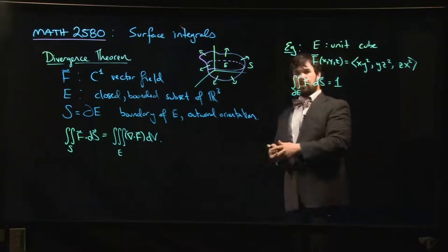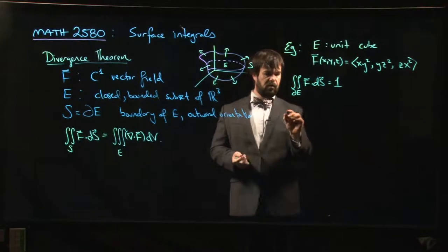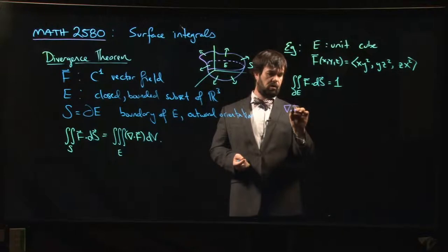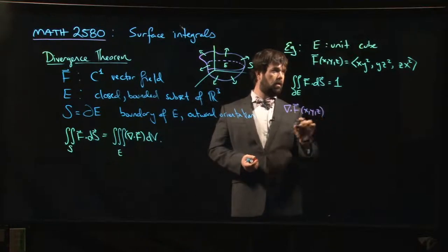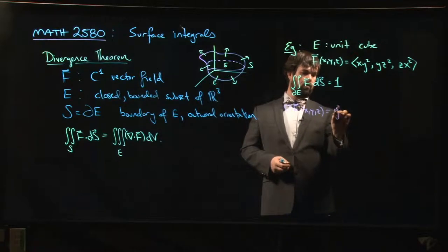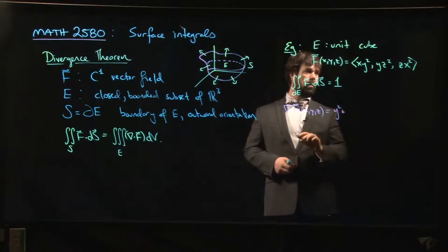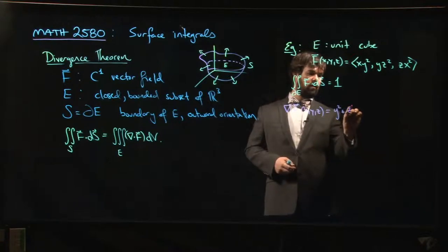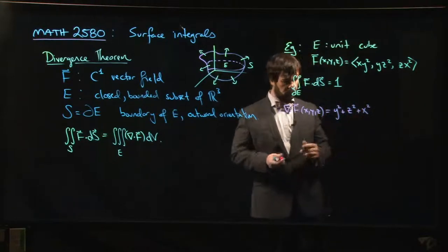So let's check that, see if this actually works with the divergence theorem. Well, what's the divergence of F? So the divergence of F is going to be... So we take the x-derivative of the first component, so we get y². We take the y-derivative of the second component, z². We take the z-derivative of the third component, we get x². So x² + y² + z², okay?